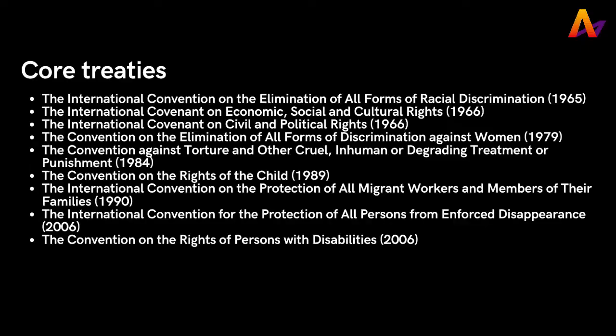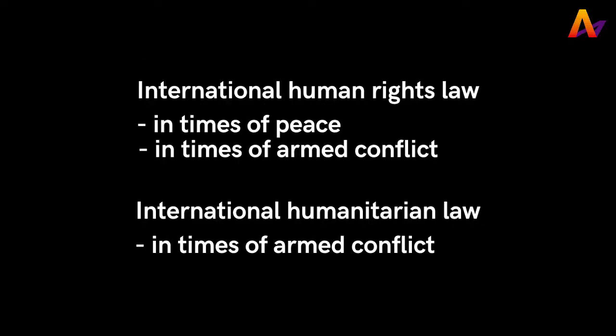International human rights law refers to the body of international law designed to promote and protect human rights at the international, regional, and domestic level. International human rights law primarily consists of treaties and customary international law. It is important to note that international human rights law applies at all times, both in times of peace and in times of armed conflict.